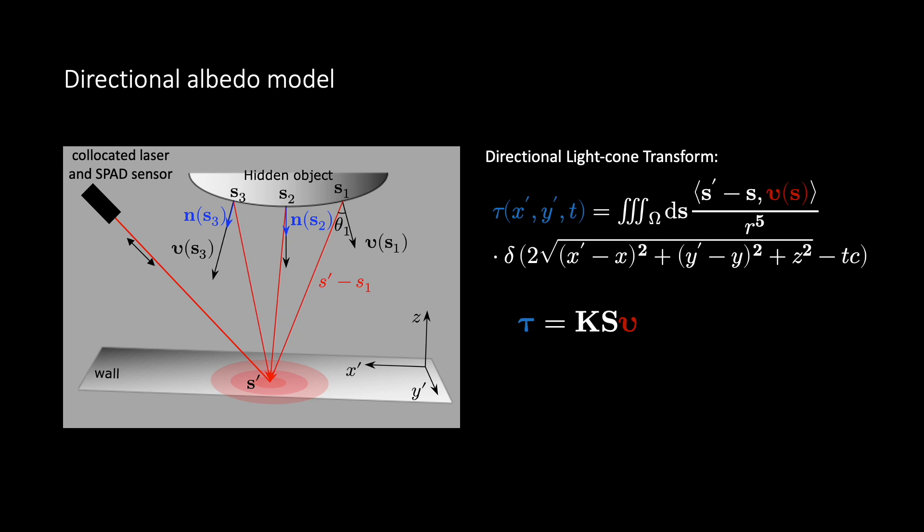The idea behind the directional light cone transform is to warp the measurements tau and the unknown directional albedo epsilon. This allows us to express the forward model as a sum of three convolutions. Notice that since we have only one equation for every three variables, standard deconvolution cannot be used to recover the directional albedo from the measurements.